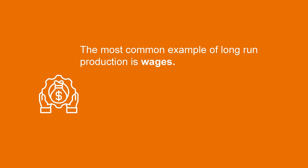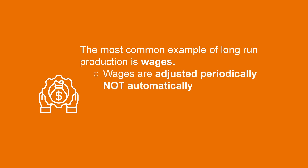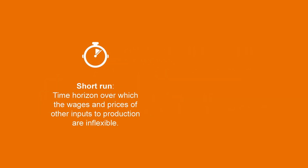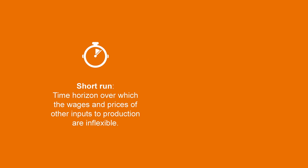What's the most common example? Wages. Wages are payments for labor which is an input used for most final products. Wages have two main qualities: they are adjusted periodically and not automatically, and they have downward inflexibility, which means as they adjust they are unlikely to be reduced. Those qualities are significantly different from final products which can adjust their prices more quickly. So the short run consists on the time horizon over which the wages and prices of other inputs to production are inflexible.